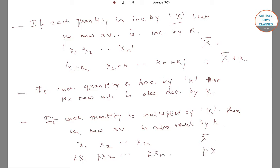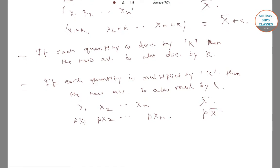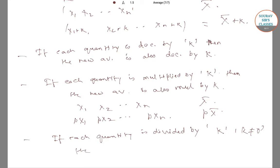Suppose we have x1, x2, till xn whose average is x-bar. Then the average of p·x1, p·x2, so on till p·xn would be p·x-bar. Similarly, if each quantity is divided by a certain number, say k, where k is not equal to 0, then the new average is also 1/k times the initial average.